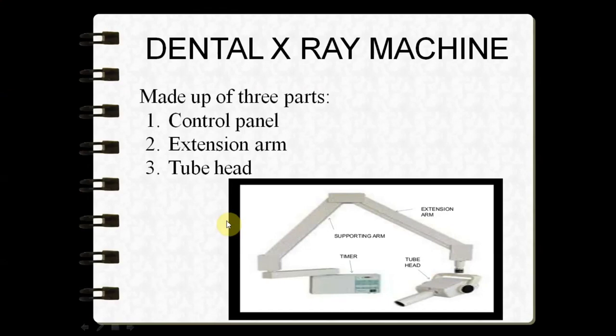The machine consists of a control panel, an extension arm, and a tube head. The control panel consists of an on/off switch, an indicator, an indicator light, and an exposure button. Once you press this exposure button, you can hear a noise, and once the noise fades off, it indicates that the exposure cycle has been completed.